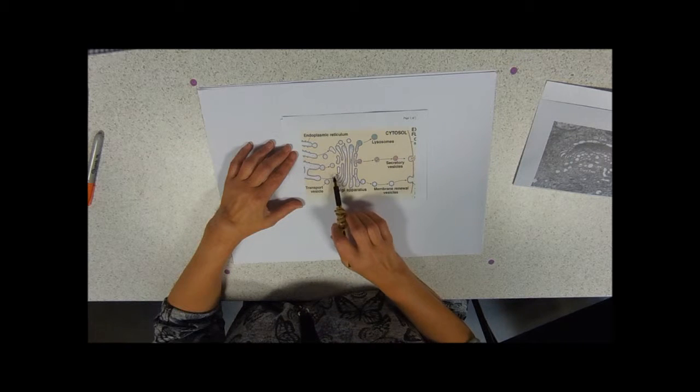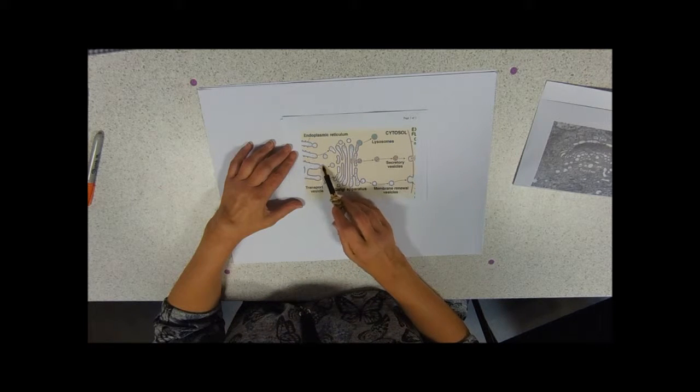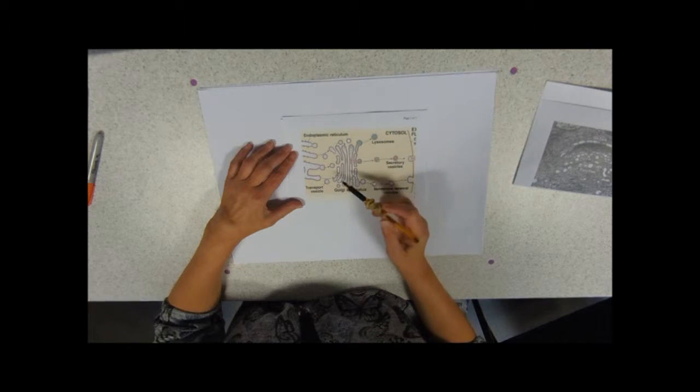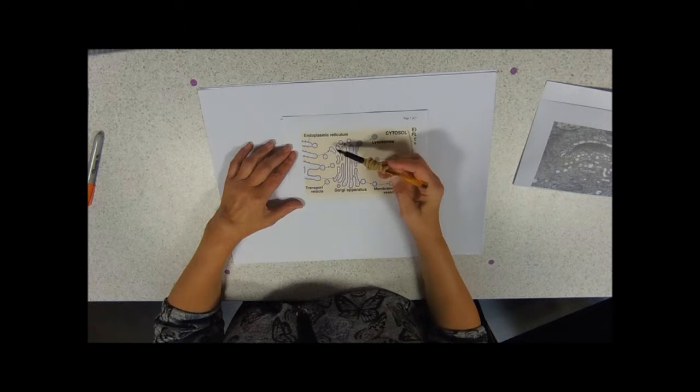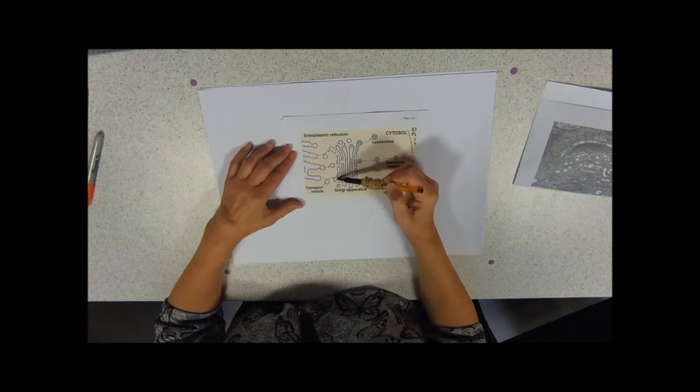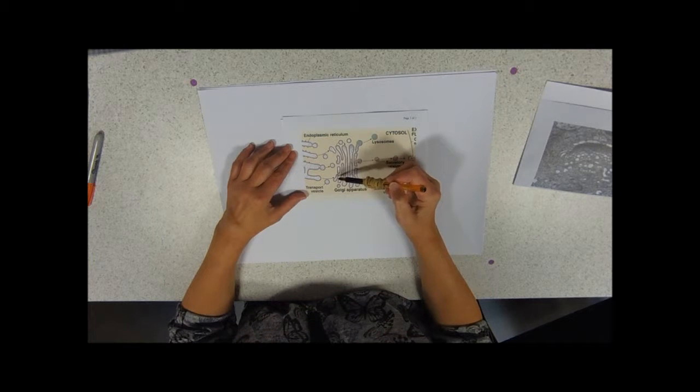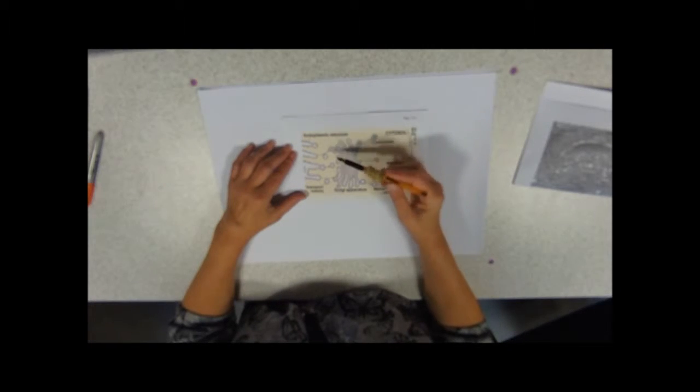To get there, they are packaged up into vesicles which bud off the endoplasmic reticulum, form these little spheres, which then go and join and shed their contents into the Golgi apparatus. So actually at one end on that cis face, the Golgi apparatus is continually building up, forming new cisternae.